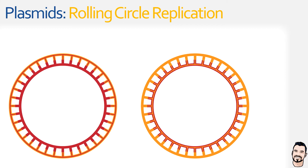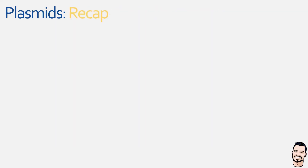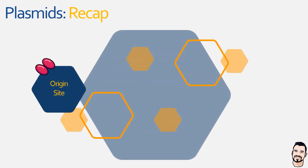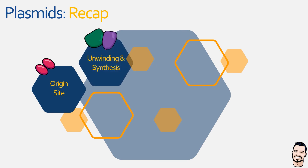To recap: first, RepA identifies the site of origin (oriC) on the plasmid and initiates replication by nicking a single strand of DNA. Next, DNA polymerase III and DNA helicase associate with the double-stranded plasmid and together allow the production of a new daughter strand complementary to the template parental strand.